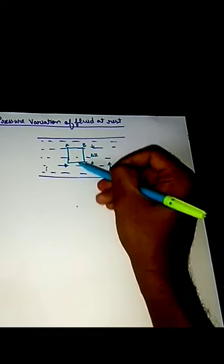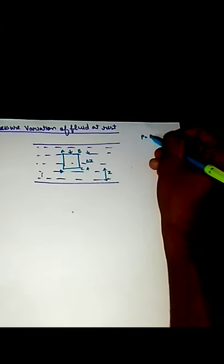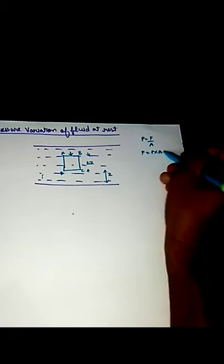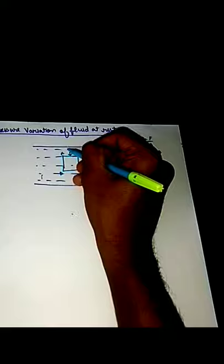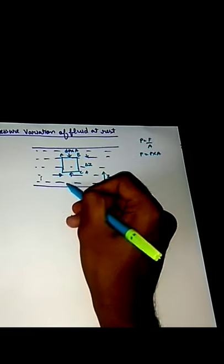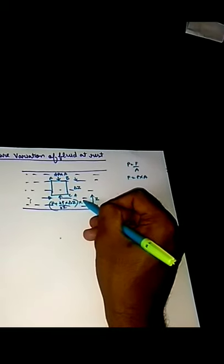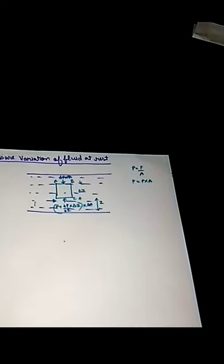Now we have a force from the top as well as from the down direction. The force exerted on AB will be dP into dA — why dP? Because we are considering only a small area AB. Now the force on DC will be P plus dP/dz into delta z into delta A, since it is a small area.